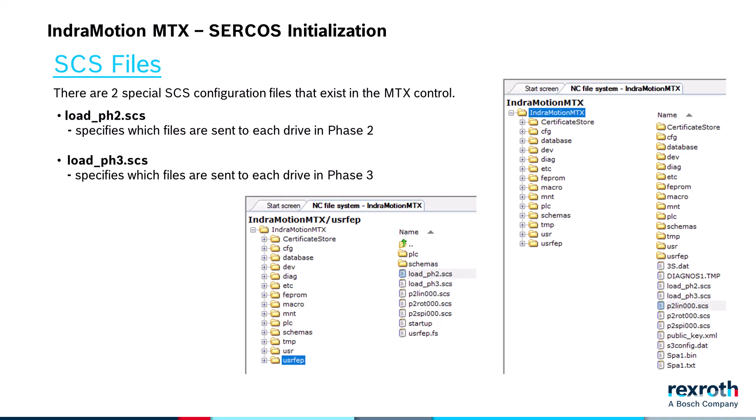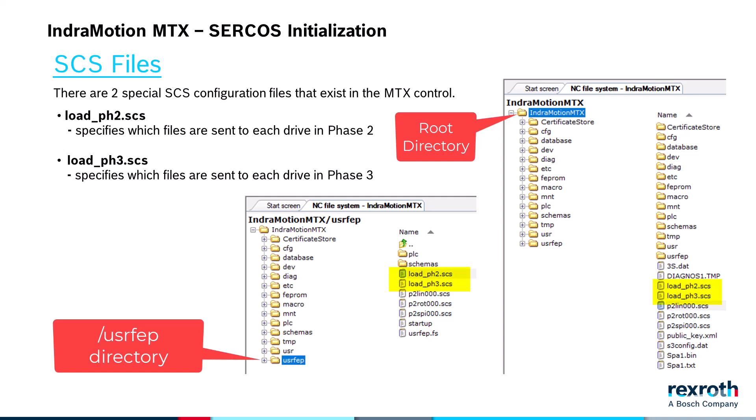The SCS files are a tool for initializing the drives. They are used to automatically download parameters to the drives when the control is starting up, and they are able to overwrite the values generated by the control. There are two SCS files that exist in the MTX control. The first file is load_PH2.SCS, which specifies which SCS files are sent to each drive in phase 2. The second file is load_PH3.SCS, which specifies which SCS files are sent to each drive in phase 3. During startup, the control checks if these configuration files exist either in the root or the user FEP directories; if they do exist, then the control will use them to initialize the drive parameters.